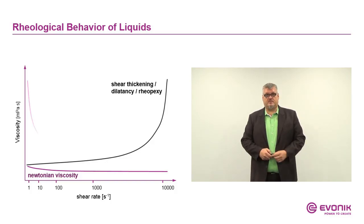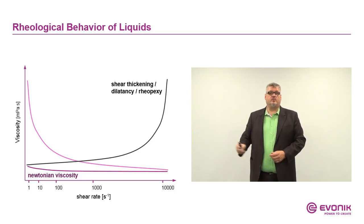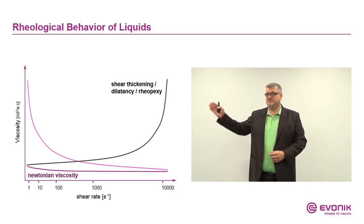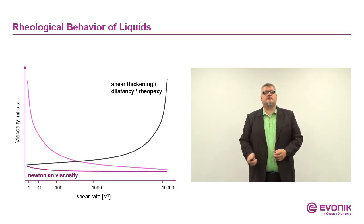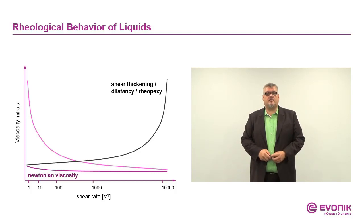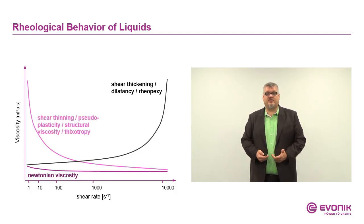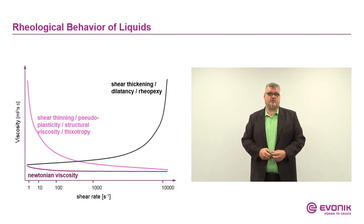The most important part is this one. This graph shows a viscosity that is very high at low shear forces applied, and becomes thinner and thinner — so the viscosity decreases down to really low values — with very high shear forces applied. This effect is called shear thinning, pseudoplasticity, structural viscosity, or thixotropy. Why this is so important to us, we will show in the next graph.